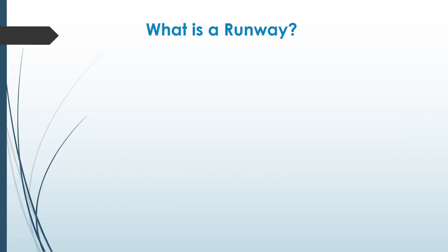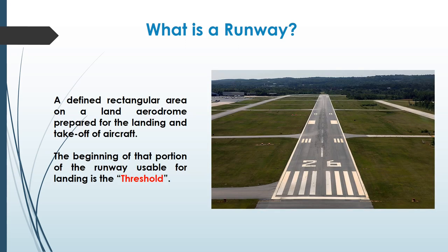There are a few terms we should be aware of before understanding declared distances. A runway is a defined rectangular area on land aerodrome prepared for the landing and takeoff of an aircraft. As you can see in the image, this is a runway, and the beginning of that portion of the runway that is usable for landing is called the threshold of the runway. So this becomes the threshold of runway 26.